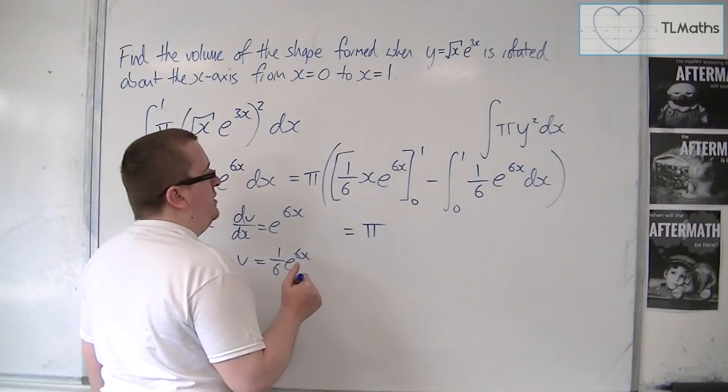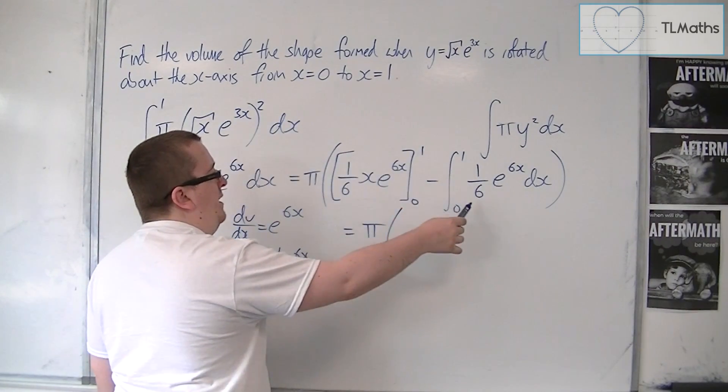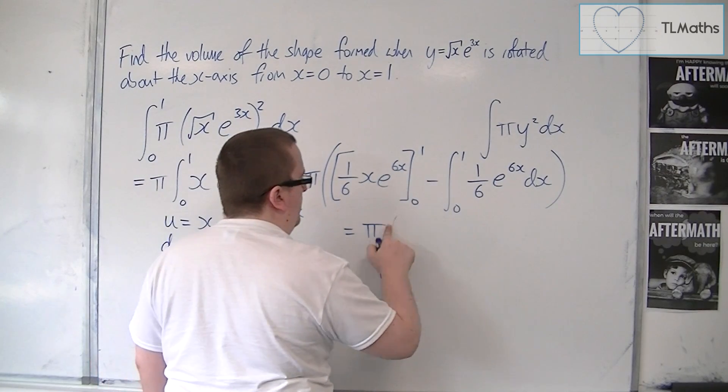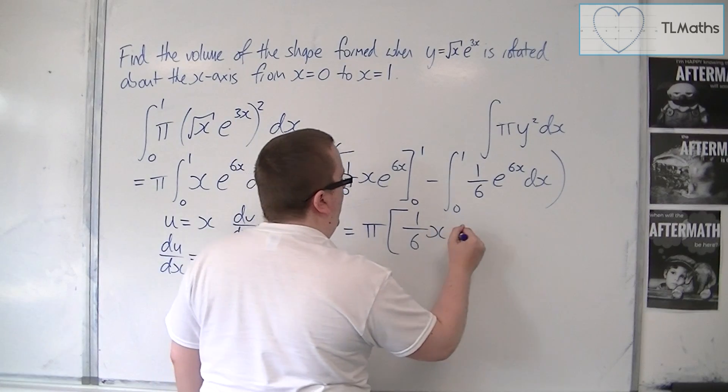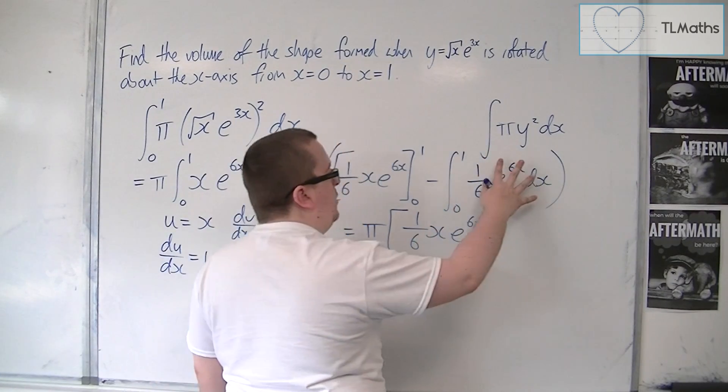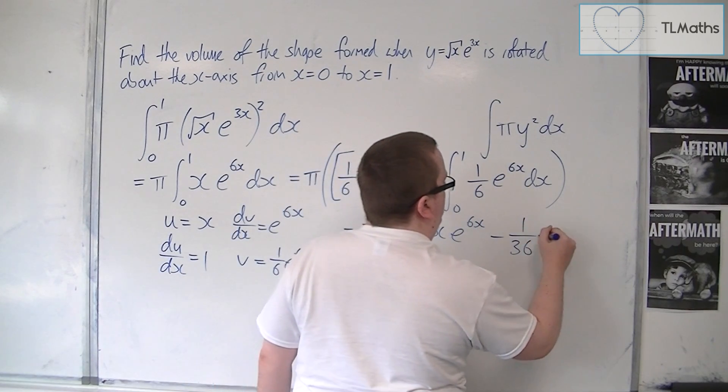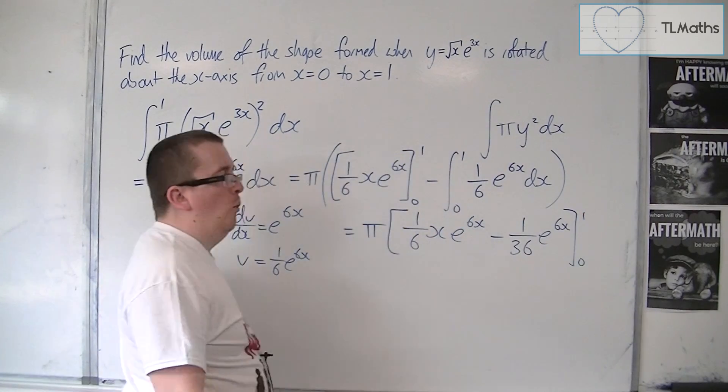Okay, so we have pi times, let's evaluate that in a moment, let's put it all into one big square bracket. We've got the 1 sixth x e to the 6x, then we want to integrate this, so take away 1 over 36 e to the 6x, evaluate it between 0 and 1.